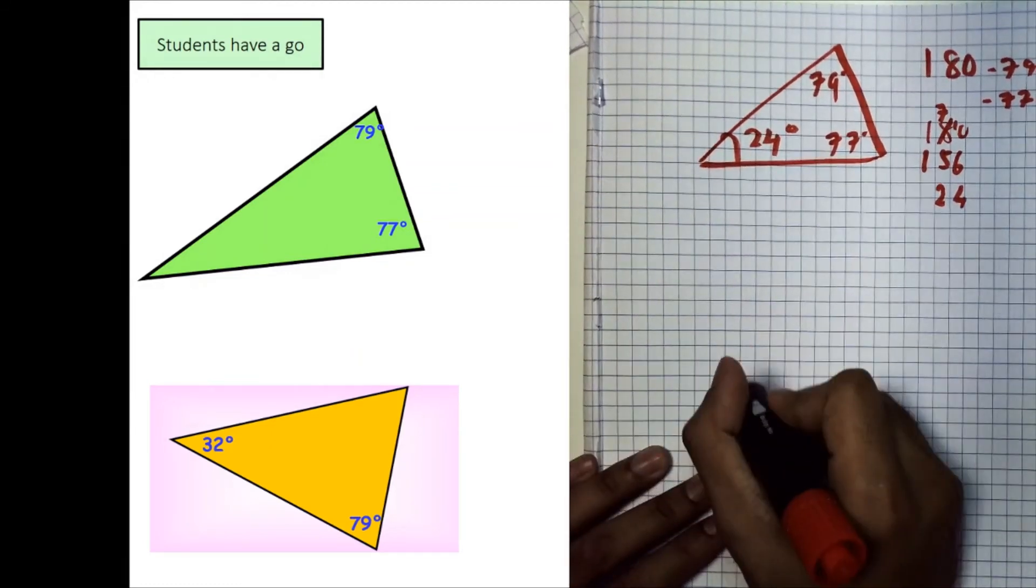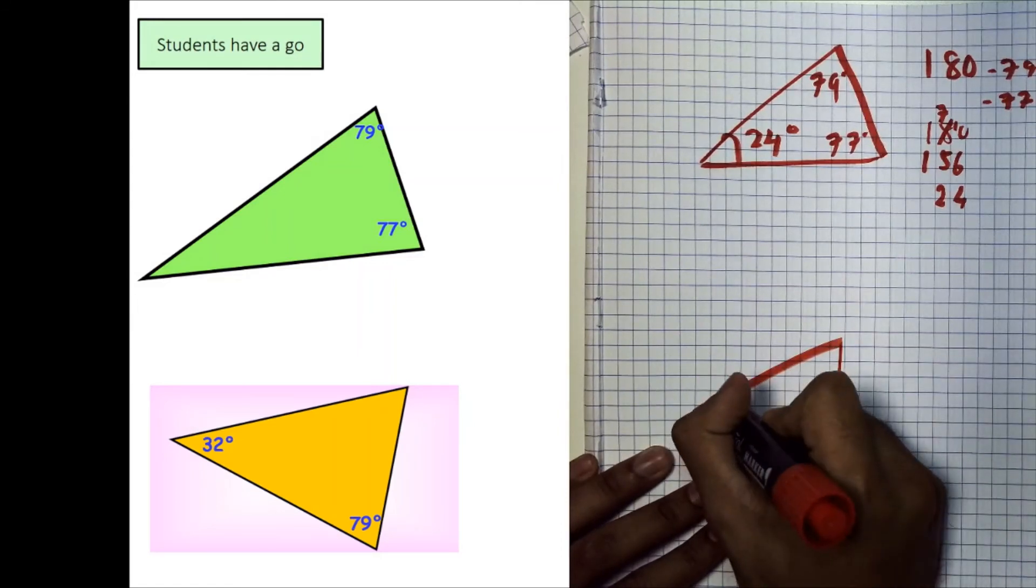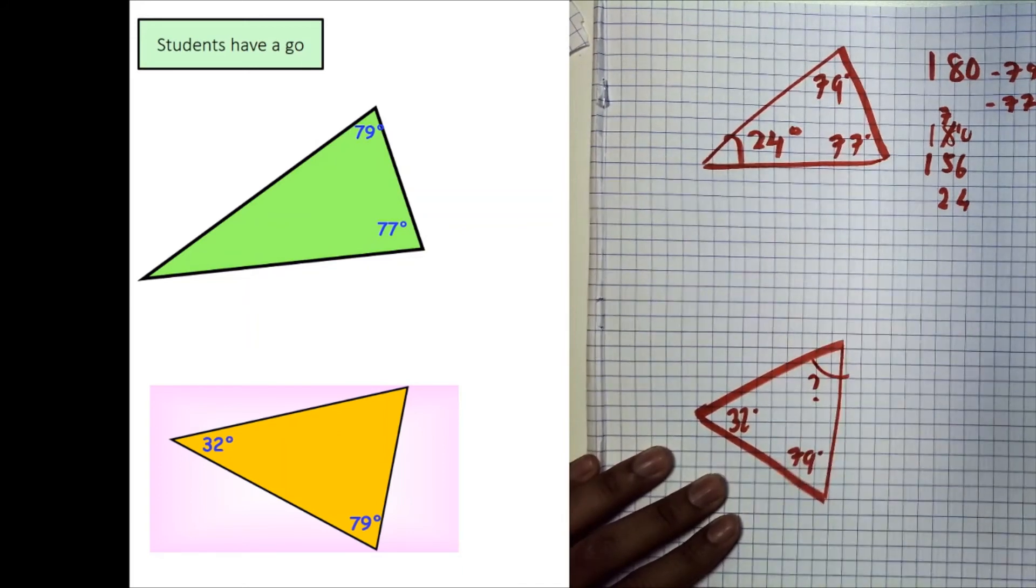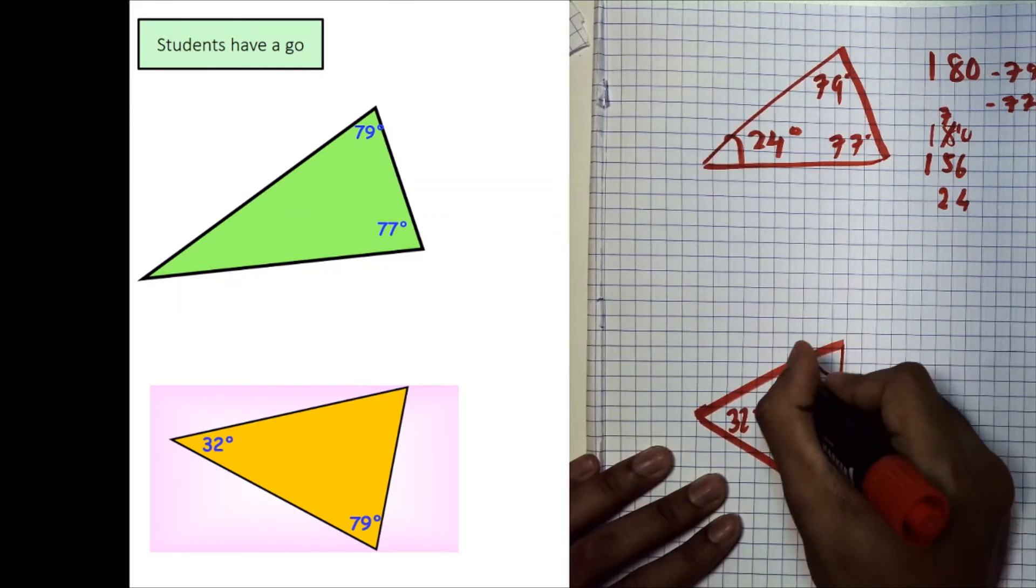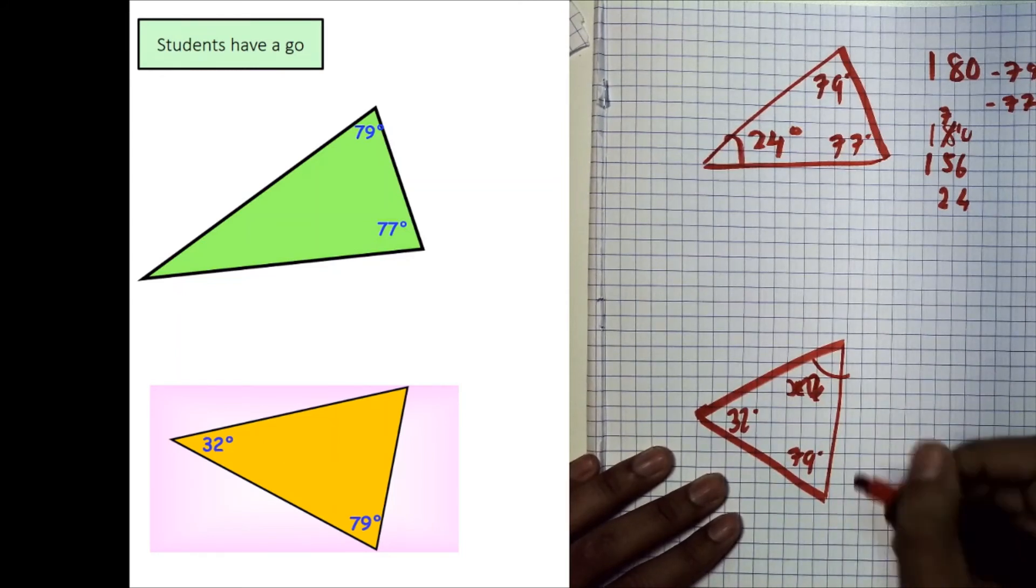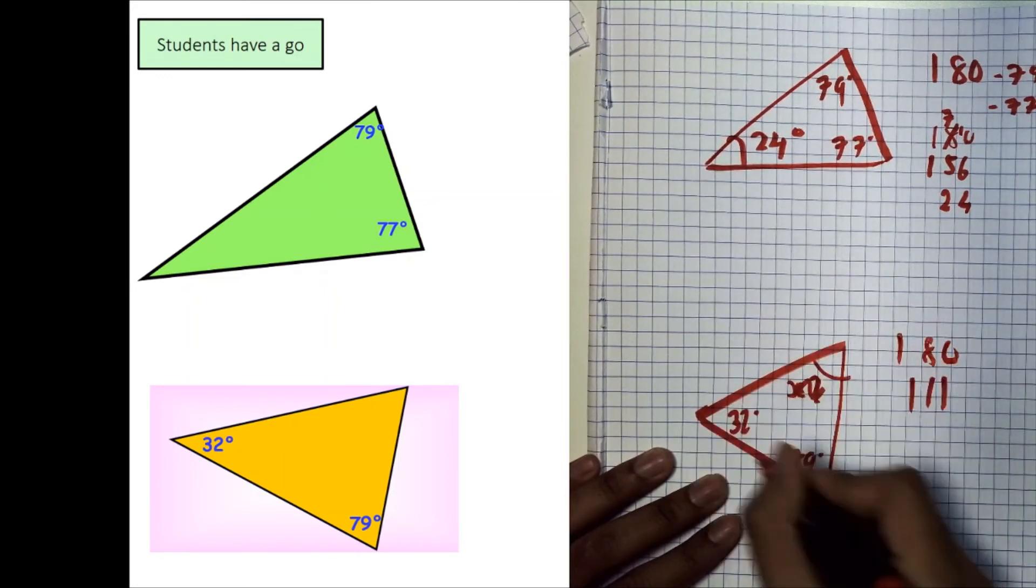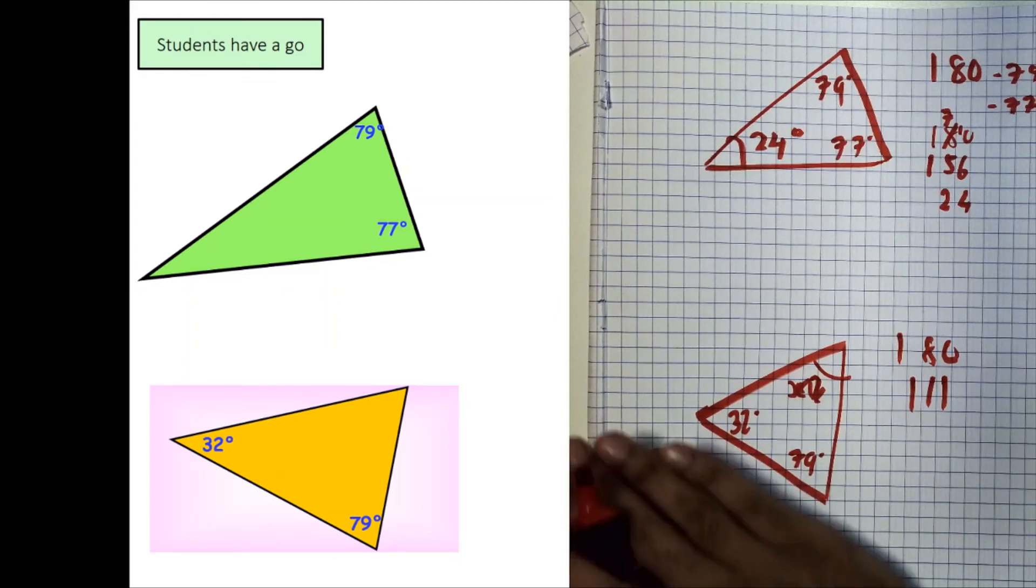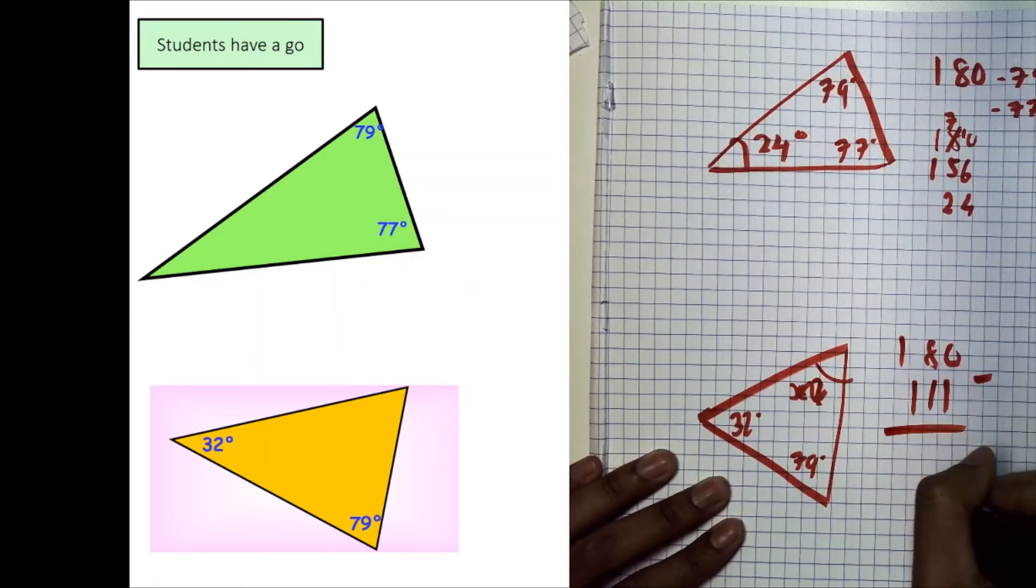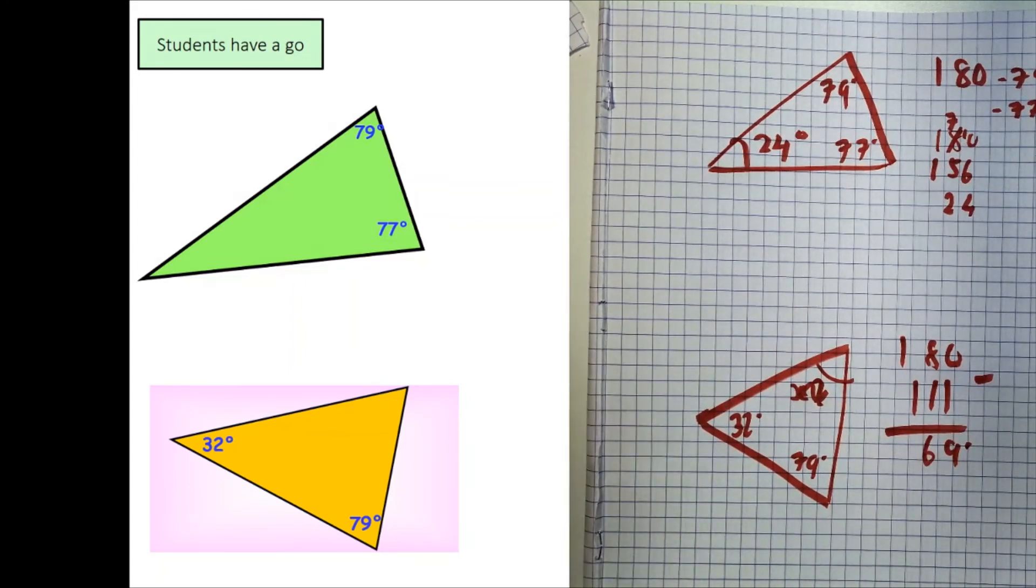Now, for the second triangle, again, I'll just sketch it out. This angle over here is said to be 32 degrees, this one is said to be 79 degrees, and we don't know this angle over here. Call it question mark, call it x, call it whatever you want, it doesn't really matter, as long as you get to the answer. Once again, 32 plus 79, in this case, will be 111. We know that the total of all three angles is 180, two of them are going to be 111 together. So, if we subtract that 111 away, we should end up with 69. So, 69 degrees is what you should have gotten for this angle over here.